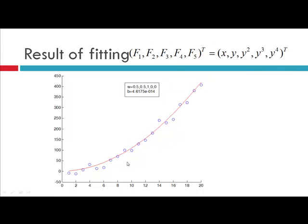Now consider another basis function: [x, y, y², y³, y⁴] as a column vector. If you fit this basis function to the dataset you will get this curve, where your parameter w is [0.5, 0.5, 1, 0, 0] and your b is 4.6175 times 10 to the negative 14. So this is the fitting you get after fitting this polynomial basis function.